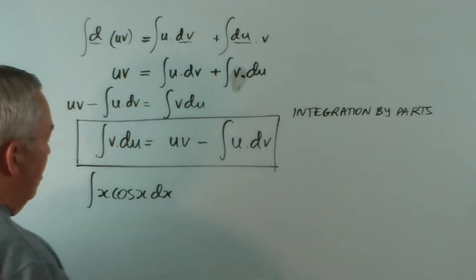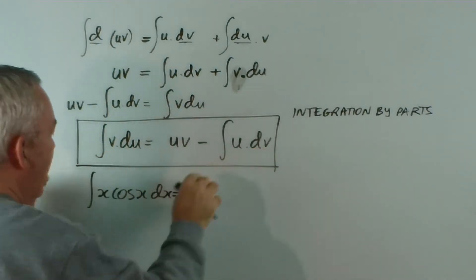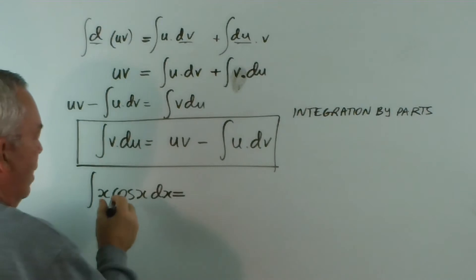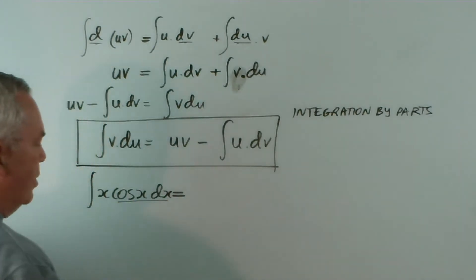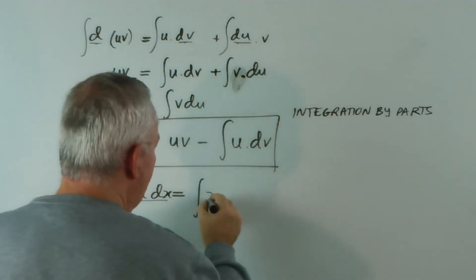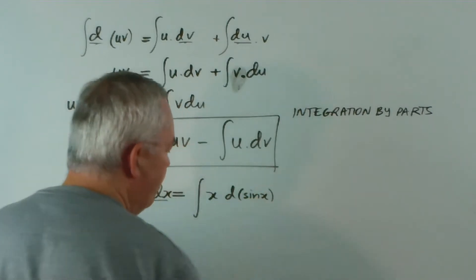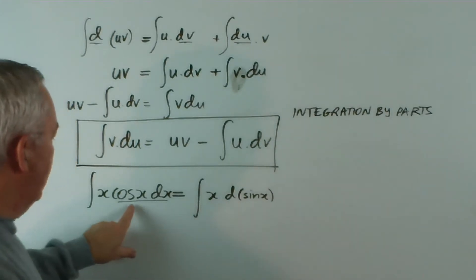But I want you to notice, if we follow this pattern, then I can rearrange this and replace cos x dx with d(sin x). Why can I do that? Because the derivative of sine x is cos x.